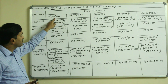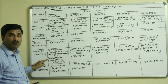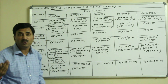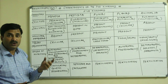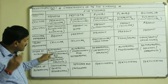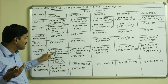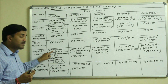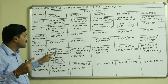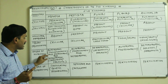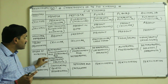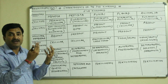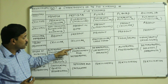Mode of nutrition: Monera have both autotrophic and heterotrophic modes of nutrition. Autotrophic means they can synthesize food. Some bacteria use chemical substances to synthesize food — this is called chemosynthesis — while others use light energy and are photosynthetic. Some prokaryotes are heterotrophic — they may be saprophytic, feeding on dead and decaying organisms, or parasitic, feeding on other living hosts.